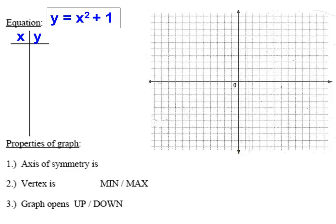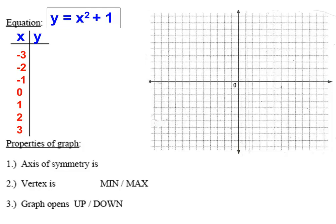We're going to graph y equals x squared plus 1. When we look at this, we should know we're working with a quadratic equation because the variable x is being squared. Whenever you have a variable squared, we are working with a quadratic equation. So this is not going to form a straight line — it's going to form a parabola. We'll pick values for x, plug them in, get a y out, and plot those points.